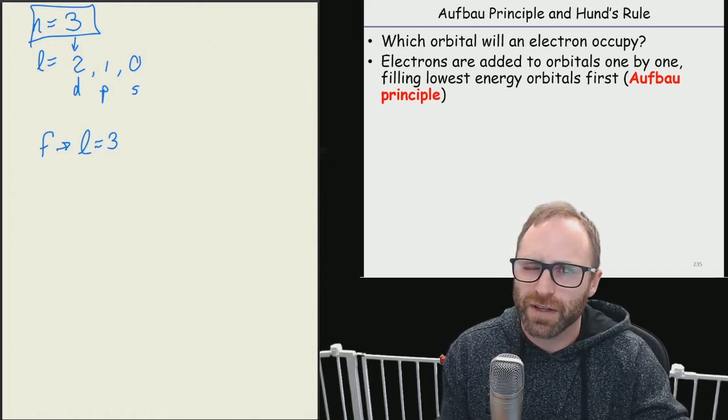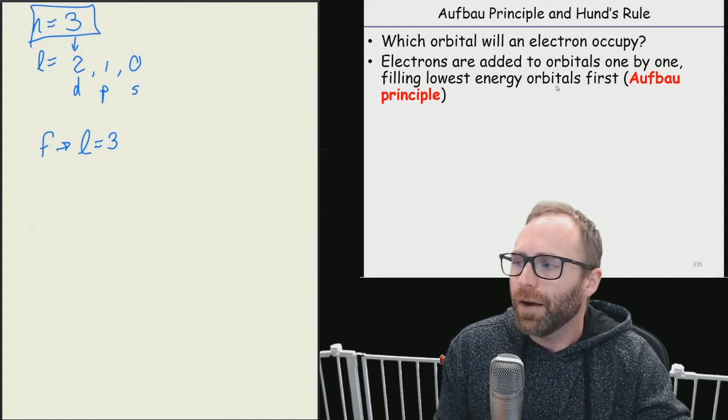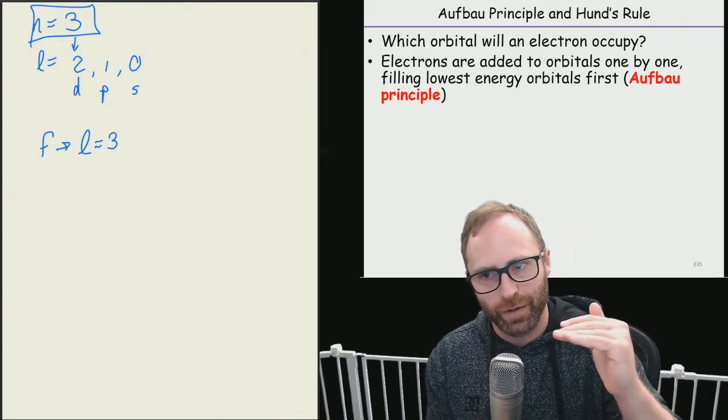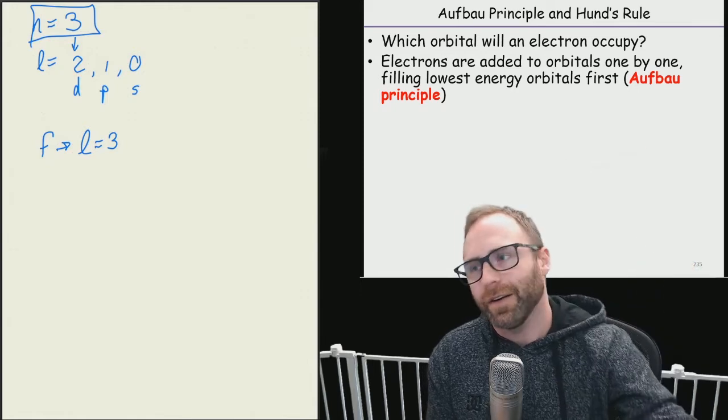So one by one, we're going to fill our lowest energy orbitals first. This is called the Aufbau principle, the build-up principle. This one is basically saying we have to start at those lower energy orbitals, fill those with electrons, and then go on up to higher energy.